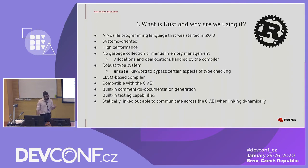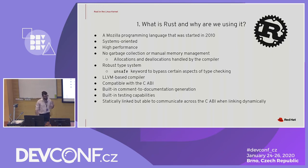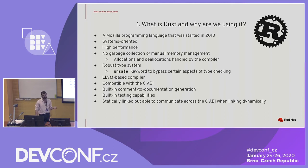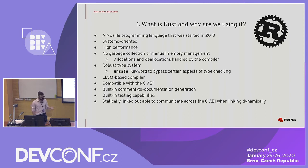Rust is a highly systems-oriented programming language. It's very high performance despite being a relatively new language, starting around 2010, and has made a lot of headway in that time. We get some really nice benefits like no garbage collection or manual memory management — allocations and deallocations are handled by the compiler. It has a robust type system that allows you to use unsafe to opt out of stricter security checks, and it's LLVM-based, giving you really nice optimizations. All of that together with existing ecosystem documentation and built-in testing capabilities makes it a really attractive option.